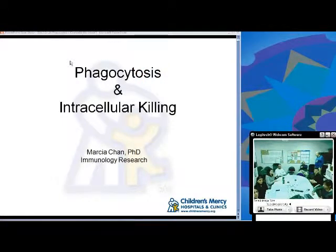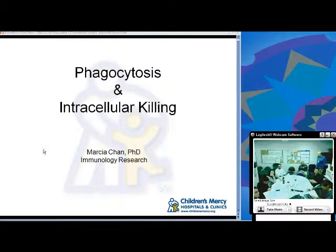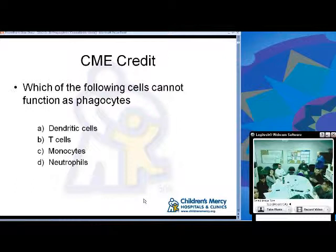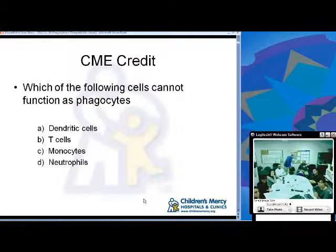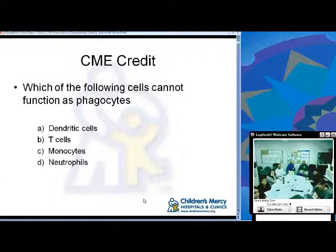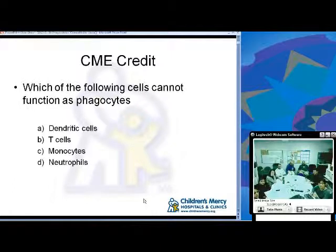Today we're going to talk about effector mechanisms of innate immunity, namely phagocytosis. Let's do some internal CME credit. Which of the following cells cannot function as phagocytes? Dendritic cells, T cells, monocytes, or neutrophils? We'll review the questions after the talk. Give it your best guess.